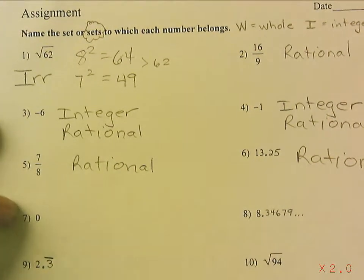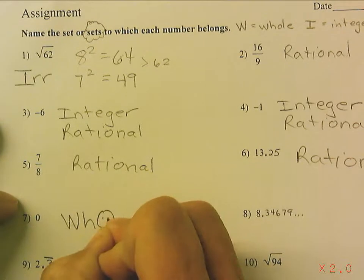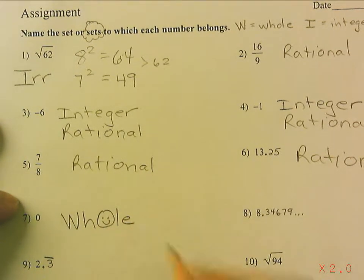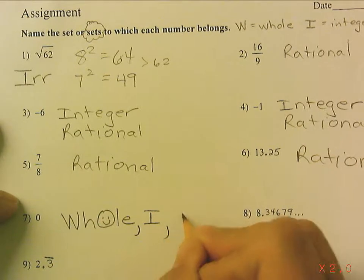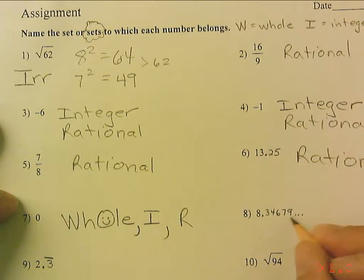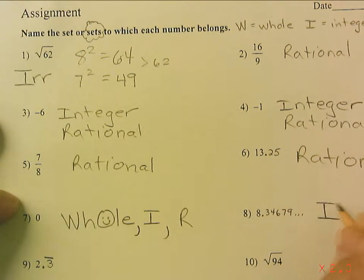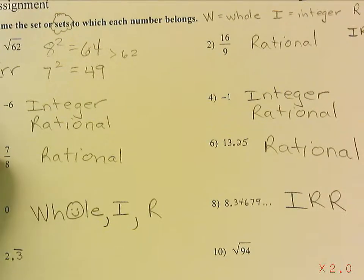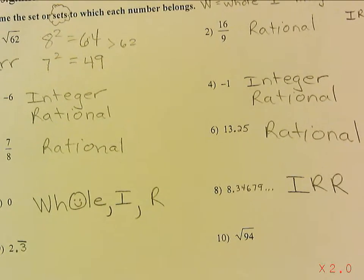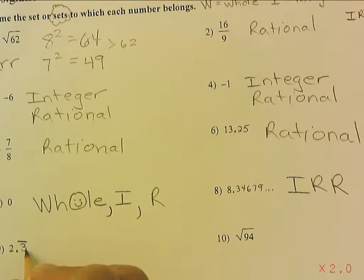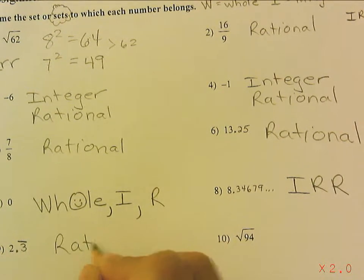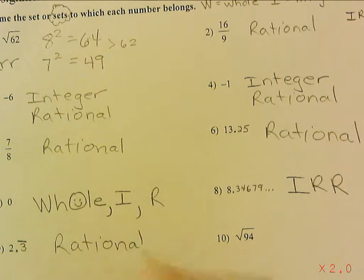Zero — happy Mr. Zero — is a whole number, and anything that's a whole number is automatically an integer and automatically rational. Number 8, 8.34679 dot dot dot: it continues, does not repeat, and does not terminate — therefore it's irrational. Number 9 uses bar notation. Bar notation means it repeats, and if it repeats it's rational; if it didn't repeat, it would be irrational.